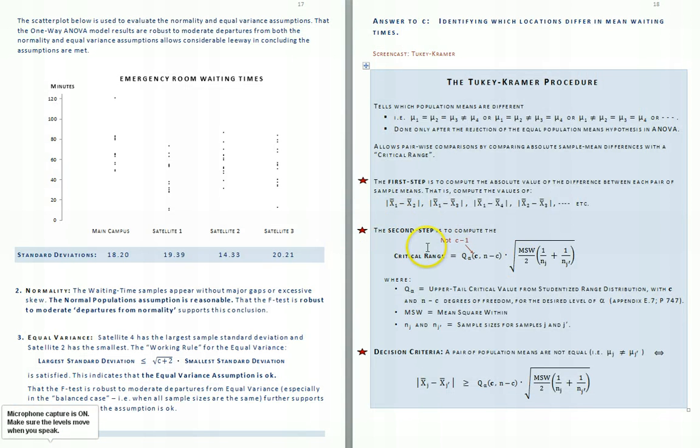Step two involves computing a quantity called the critical range. The critical range is the product of two numbers. The first number is referred to as q alpha and we'll talk more about it in a moment.